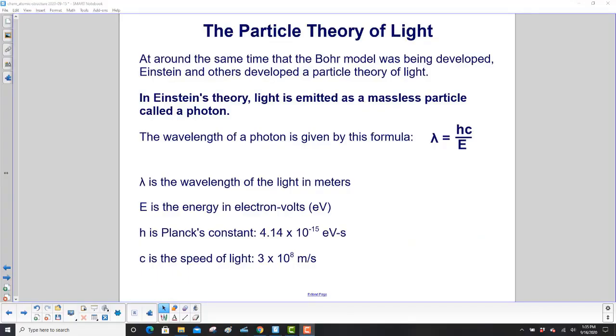At around the same time that the Bohr model was being developed, Einstein and others developed a particle theory of light, which actually started way back with Isaac Newton. In Einstein's theory, light is emitted as a massless particle called a photon, massless meaning it has no mass. The wavelength of a photon is given by this formula: wavelength lambda equals Planck's constant times the speed of light divided by its energy.